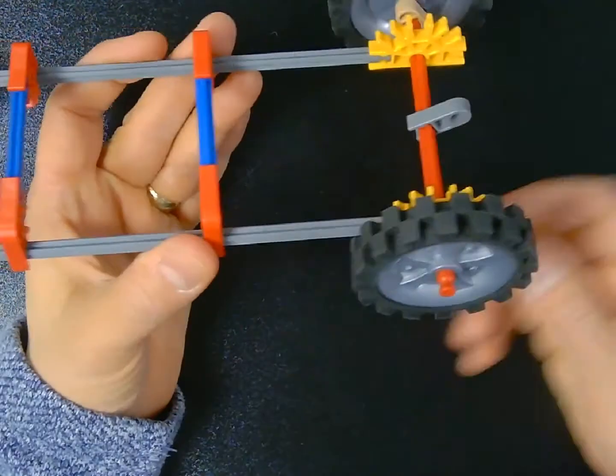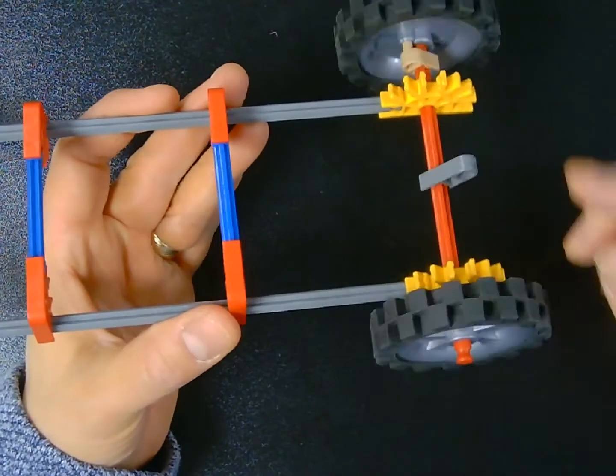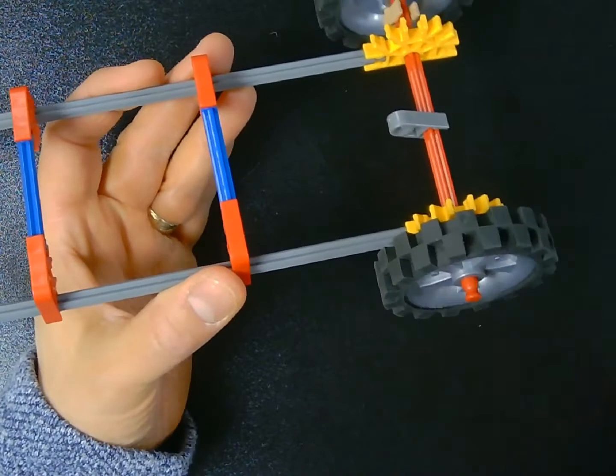The back axle, on the other hand, is directly connected to the wheels. And when you spin the axle, it spins the wheels. Or when you spin the wheels, it spins the axle.